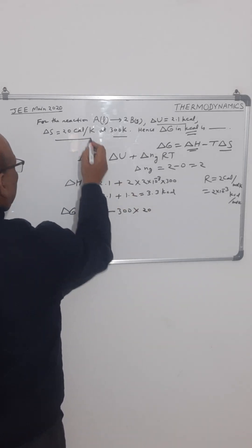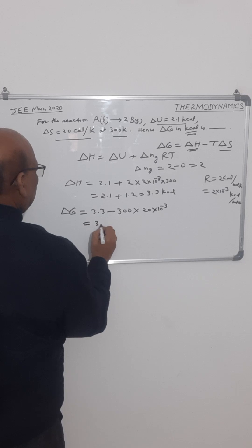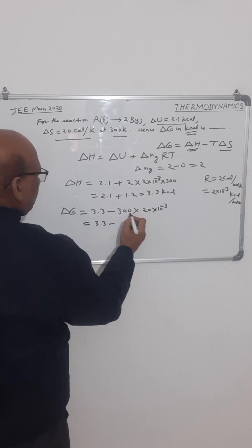But this is in calories, so we will convert into kilocalorie. So this will be 3.3 minus, 300 will get cancelled out from this, so we will get 6.